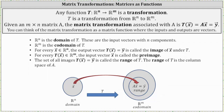Welcome to an introduction to matrix transformations. Any function t that maps from Rn to Rm is a transformation, and we say t is a transformation from Rn to Rm. Given an m by n matrix A, the matrix transformation associated with matrix A is t of vector x equals matrix A times vector x, which is equal to some output vector y. The input vectors are in Rn and the output vectors are in Rm, where n is the number of columns in matrix A and m is the number of rows in matrix A.